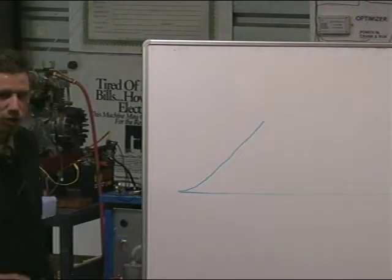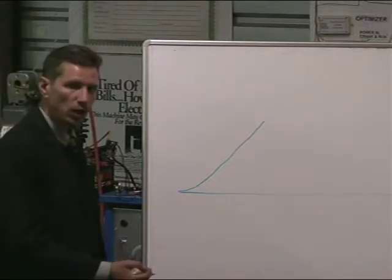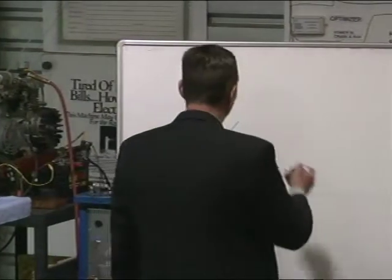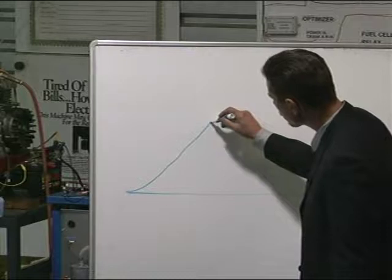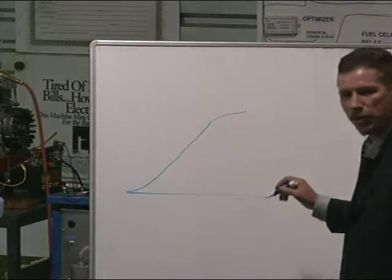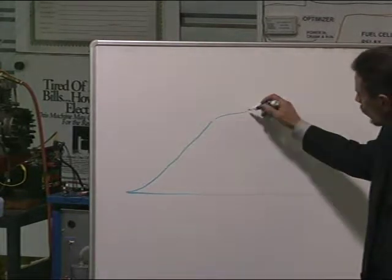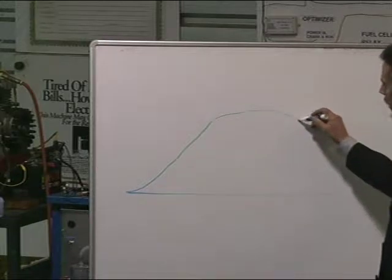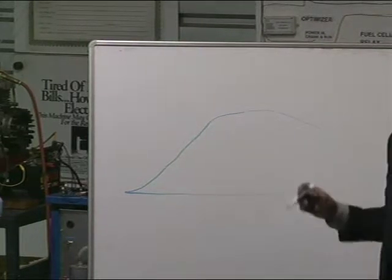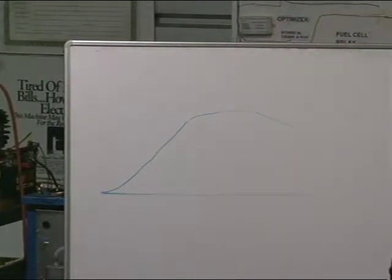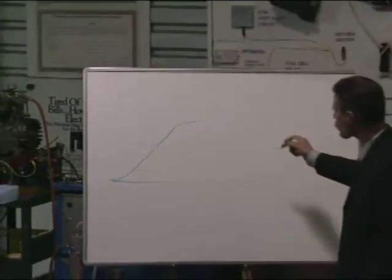So after adding so much of the water fuel, eventually we start getting less and less gain. We add more and more water fuel and we get less and less gain. Eventually the fuel economy will go back down because the load on the alternator takes horsepower and that horsepower drain will start to outweigh the gains that we're getting from the water fuel.